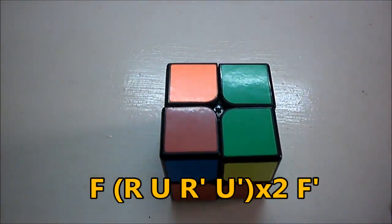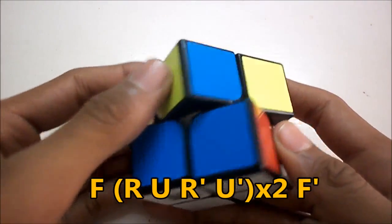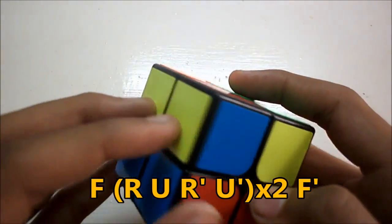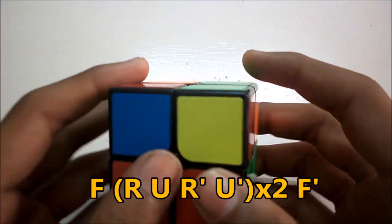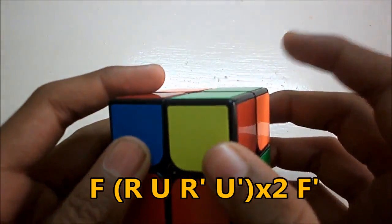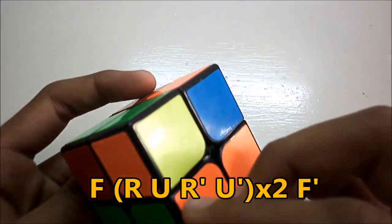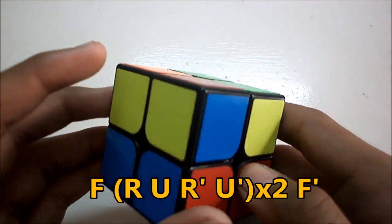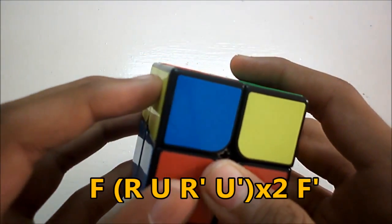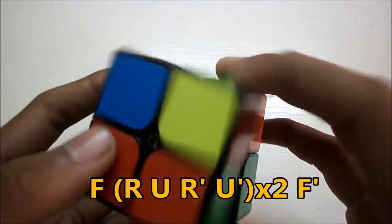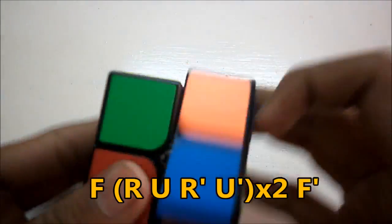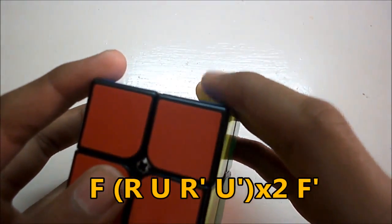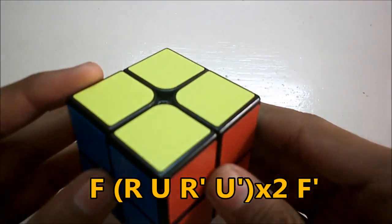So this is the next case when you have the bottom layer solved, none on top, and you have a pair of headlights. But this time these two corners are opposite from each other. So holding the cube like this with the headlights on the left, perform the algorithm F, sexy move which is R U R' U' twice, and then an F' to finish off the algorithm.